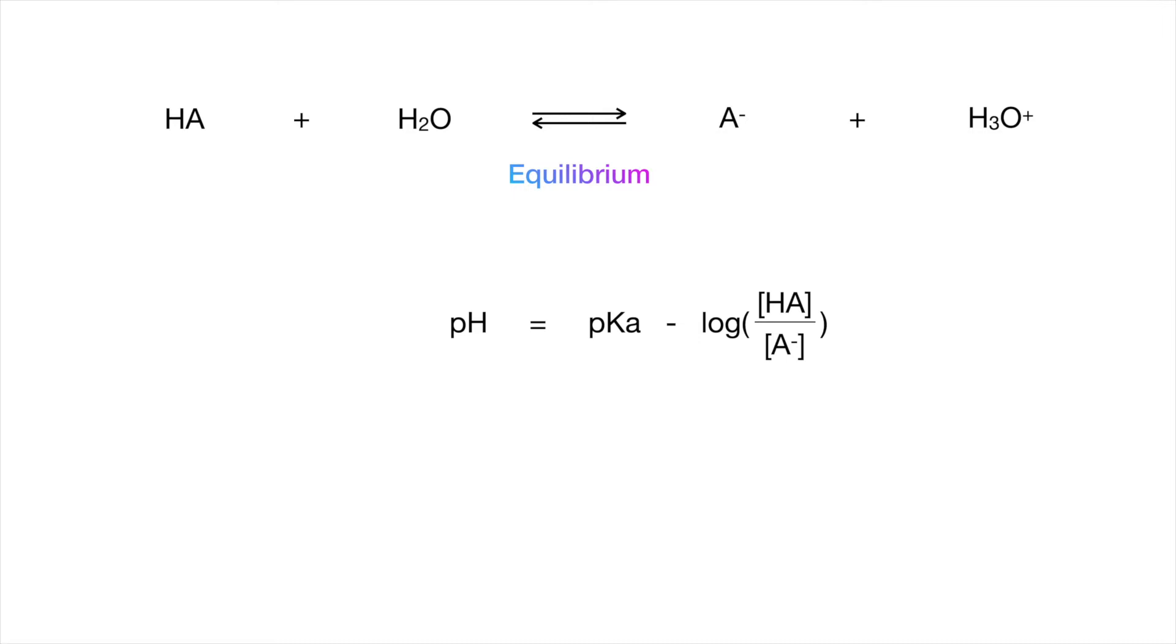So, that's why we log the entire thing to make the values more compact. Treat pKa as a scoring system. The lower you score, the weaker your bond is, hence the more acidic you are. So, low pKa, high acidity, high pKa, low acidity.